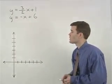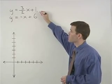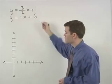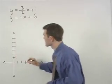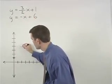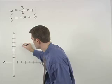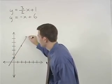So let's start by graphing the line y equals 3 halves x plus 1. It has a y intercept of 1 and its slope is 3 halves. So we go up 3 and over 2 and we have our first line.